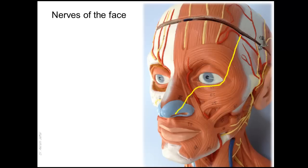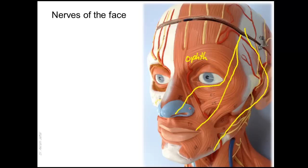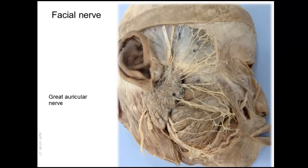You can see the areas supplied by these three divisions. This area is supplied by the ophthalmic division, this by the maxillary division, and this by the mandibular division of the trigeminal nerve. Only a small area of skin over the angle of the mandible is supplied by a cervical branch from the cervical plexus, which is called the great auricular nerve.